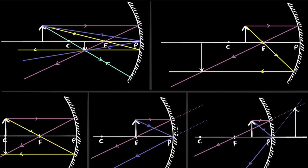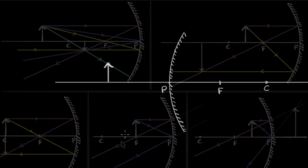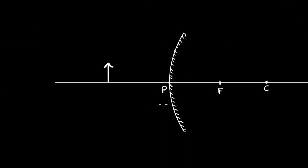So this way, just by drawing two rays of light, you can always identify where the image is going to be. You don't have to memorize the positions. Now let's do the convex mirror. This time you only have one case because F and C are inside the mirror.